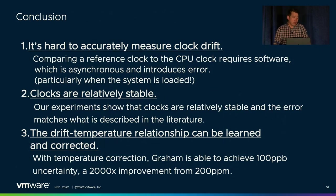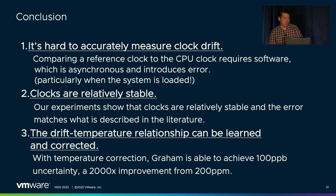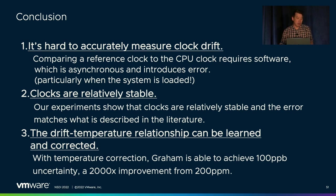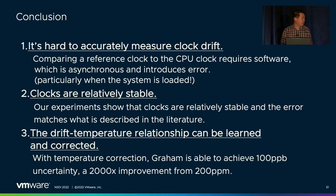In conclusion, we found that it was very hard to accurately measure clock drift — comparing a reference clock to a CPU requires software, which is asynchronous and introduces error, especially when the system is loaded. But with an accurate clock, we can see that clocks are relatively stable. Graham shows that we can measure the temperature relationship and correct for it, achieving 100 ppb uncertainty — a 2,000x improvement from the 200 ppm assumption used by existing systems.